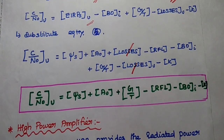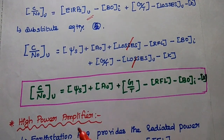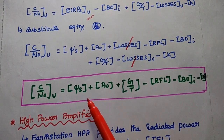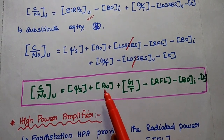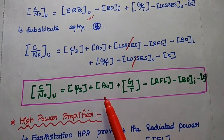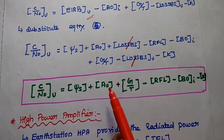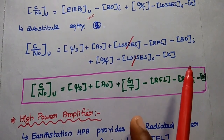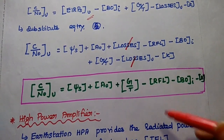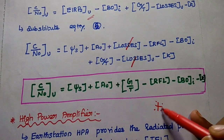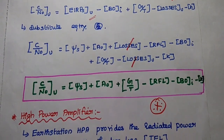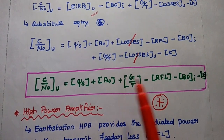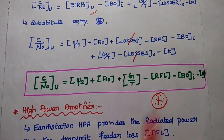After substitution and cancellation of terms, we get the final uplink carrier to noise density ratio: C/N0_U = ψ_S (saturation flux density) + A₀ (effective area of isotropic antenna) + G/T − RFL − BOI − K. This is a very important expression for uplink analysis, incorporating saturation flux density, losses, and backoff.